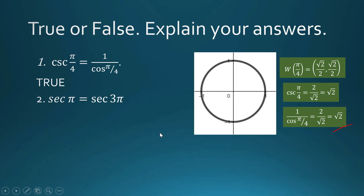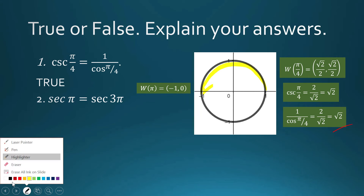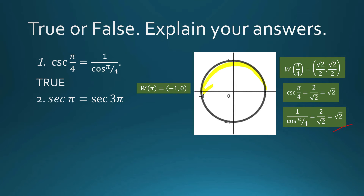Next: is sec(π) equal to sec(3π)? The arc for π corresponds to the terminal point of the semicircle, with coordinates (−1, 0). Secant of π is the reciprocal of the x-coordinate, so 1 over −1 equals −1.